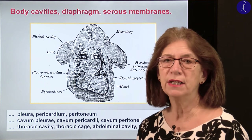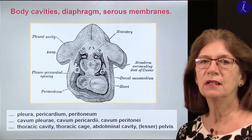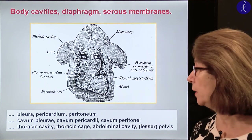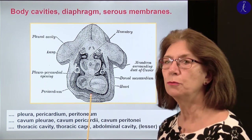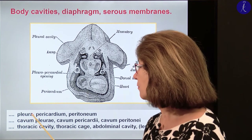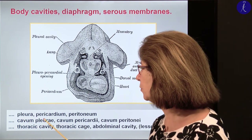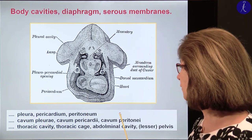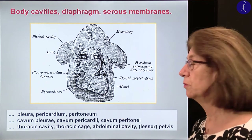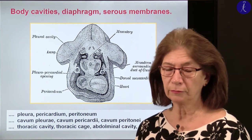Each of these has a visceral and a parietal plate. Between these two plates we have a cavity that we call the pleural cavity, the pericardial cavity, and the peritoneal cavity.